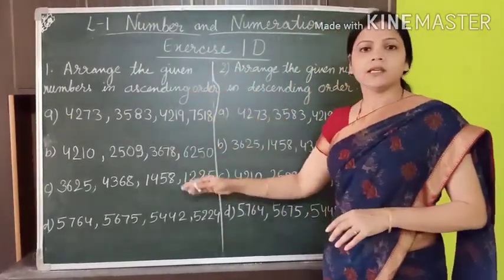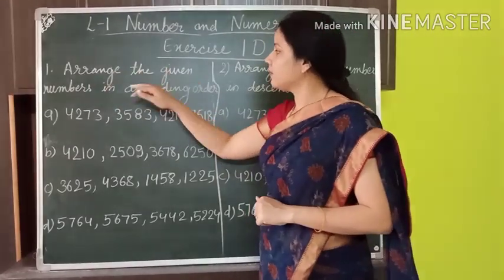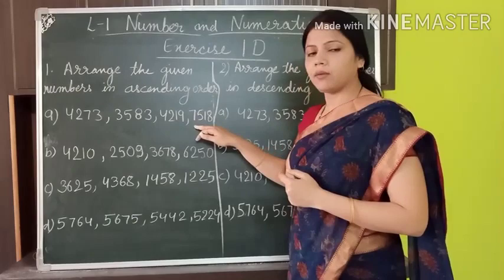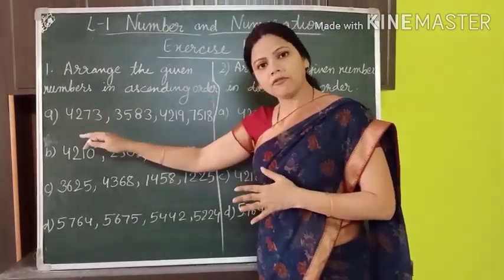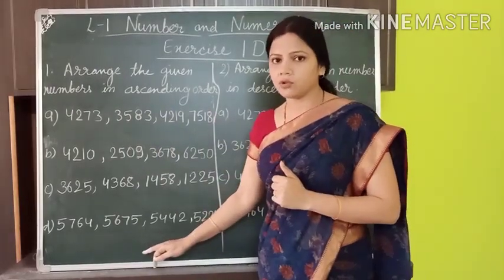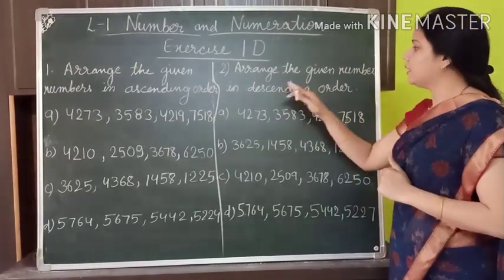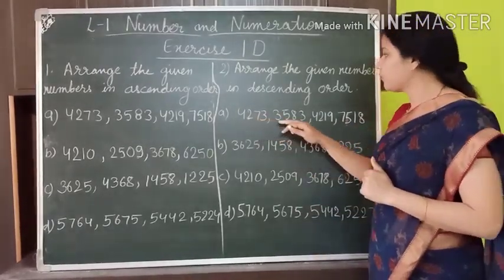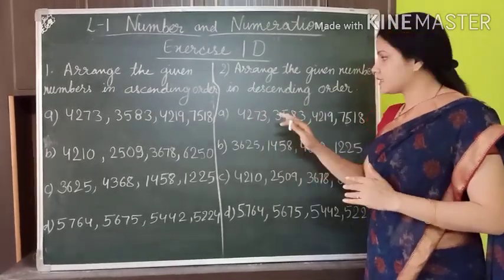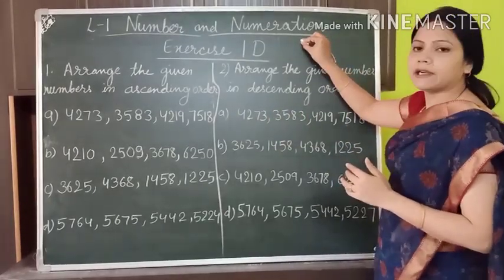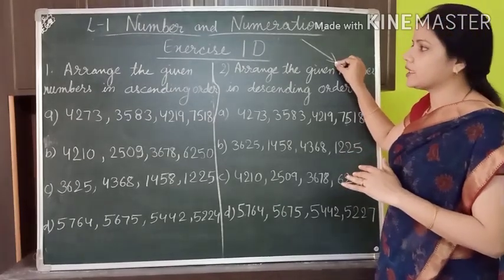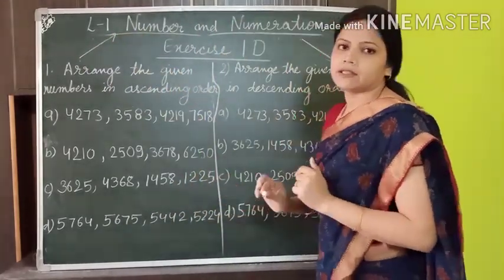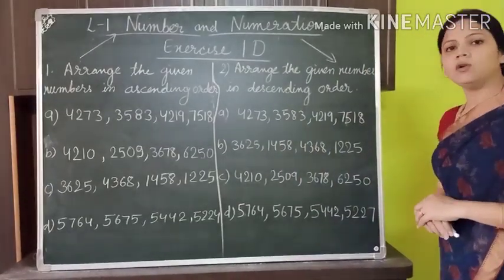In exercise 1D there are only two questions. The first one is: arrange the given numbers in ascending order. Four numbers are given in each question and you have to arrange them from smallest to greatest. The second question is: arrange the given numbers in descending order — start with the greatest and end with the smallest. Pause this video and complete this work in your maths copy.